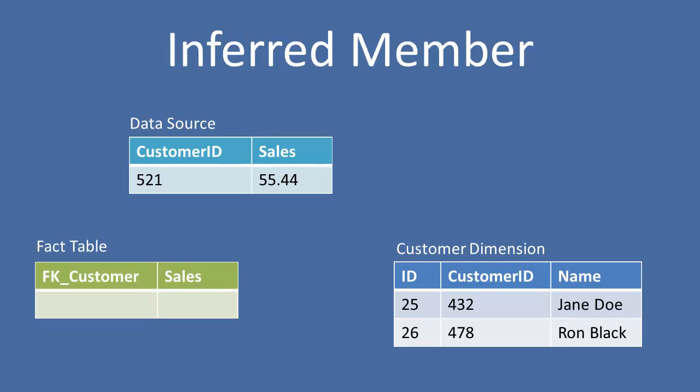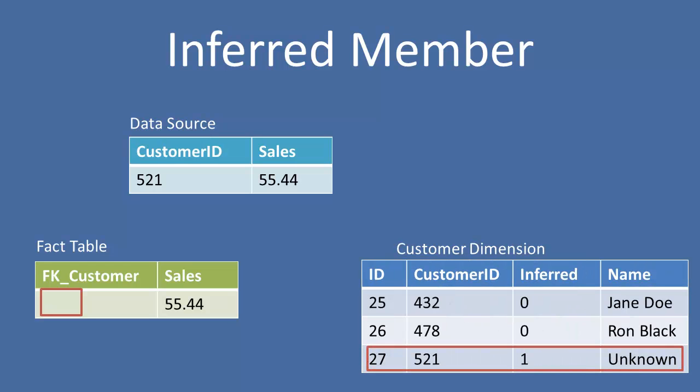The second option is to create an inferred member. Same situation — we have customer ID 521 that doesn't exist in our customer dimension. So what are we going to do with our foreign key value in our fact table? Well, this time we're going to create a new record in the customer dimension. Here we have a record where we've placed the natural key 521 in the customer ID field, which enables us to create a surrogate key of 27, and we're going to place that value in our fact table.